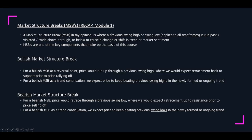Market structure breaks — last recap. A market structure break in my opinion is where a previous swing high or swing low, which applies to all timeframes, is run past, violated, traded above, through, or below to cause a change or shift in trend or market sentiment. We talked about that just before where people FOMO when they see a sell wall or a buy wall, and then a whole bunch of people FOMO — that's monkey see, monkey do. Market structure breaks are one of the key components that make up the basis of this course. A bullish market structure break has two versions: one being a reversal point where price runs up through a previous swing high, and a bullish market structure break is also a trend continuation where we sequentially and successively keep beating swing highs to continue a trend upwards. The opposite is true for a bear market structure.